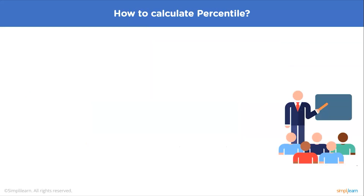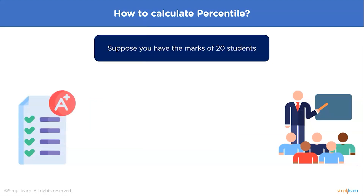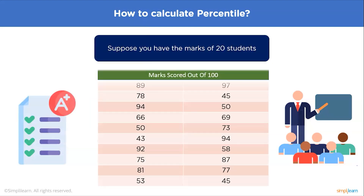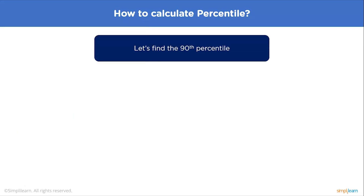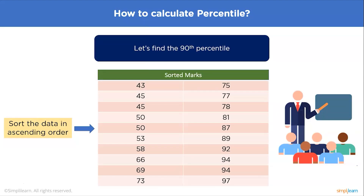So how do we calculate a percentile? Suppose you have marks of 20 students — here we have marks such as 89, 78, 94, and so on, scored out of 100. Let's try to find out the 90th percentile.